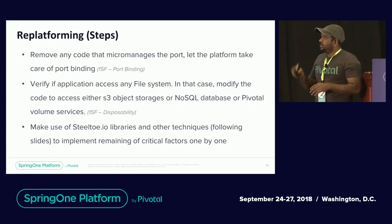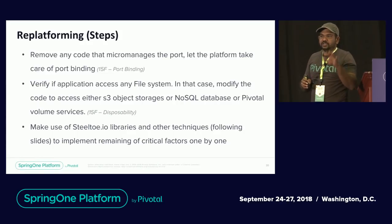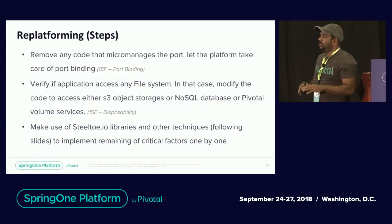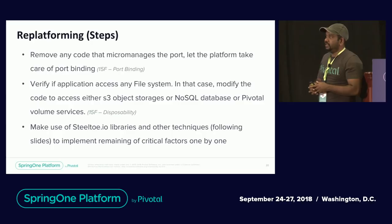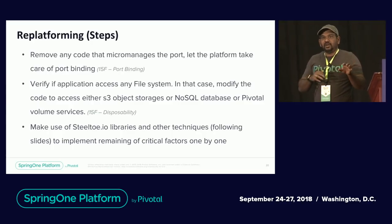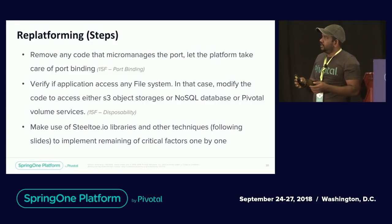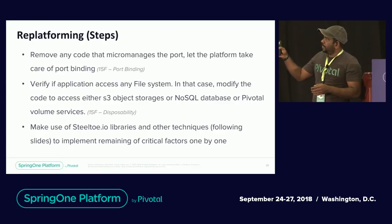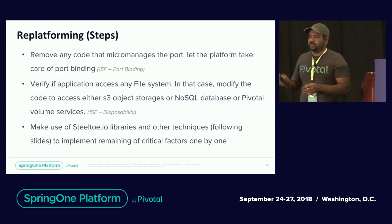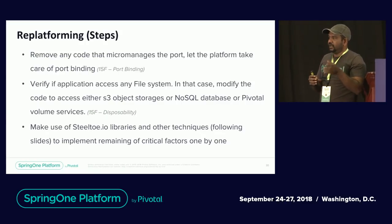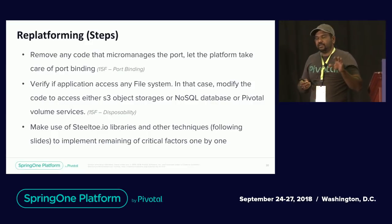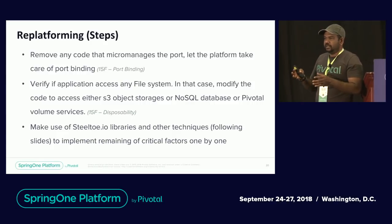Remove any code related to port micromanagement and leave it to the platform. If your application reads or writes to the local file system or NAS share, you have to remove that too. You can replace file system access with S3 object storage, NoSQL databases, or Pivotal Volume Services. The most important part is leveraging Steeltoe and techniques to easily achieve the other critical factors like configuration and logging.